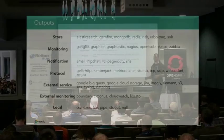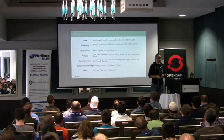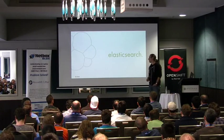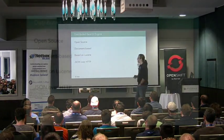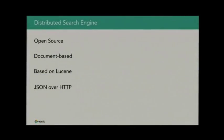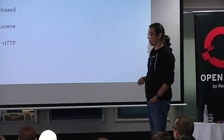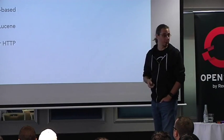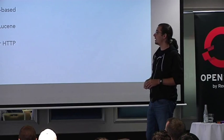So inputs, filters, and outputs are the three components that compose a Logstash configuration. Now, where does Elasticsearch fit in? Elasticsearch is the storage. It is a distributed search engine, it is open source so you can just download and install it, and it is document-based — it stores JSON documents. Literally anything you can express as JSON, you can store and analyze inside Elasticsearch. Its primary mode of communication is HTTP and JSON, so it's fairly user-friendly to talk to.